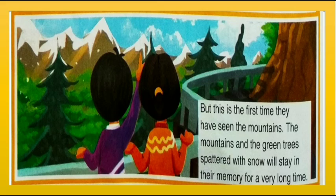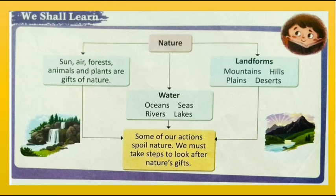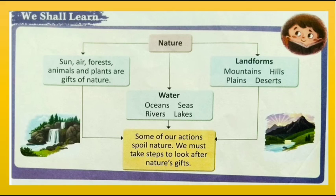Let's start our chapter. We shall learn about: nature — sun, air, forests, animals and plants are gifts of nature; landforms — mountains, hills, plains and deserts; water — oceans, seas, rivers and lakes. These are the gifts of nature. We will also learn how we can take care of our nature, as some of our actions spoil it.